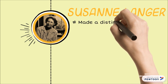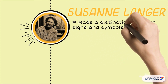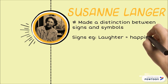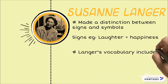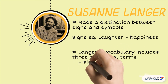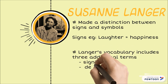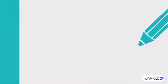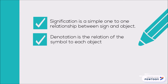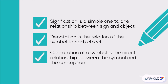She made a distinction between signs and symbols. For example, laughter means happiness. Her vocabulary includes three additional terms: signification, denotation and connotation. Signification is a simple one-to-one relationship between sign and object. Denotation is the relation of the symbol to each object — the direct relationship between the symbol and the conception.